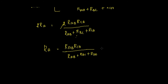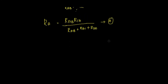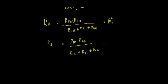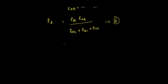Similarly, the expression for RB is: RB = RBC·RAB / (RAB + RBC + RCA). This is expression B. And RC is: RC = RBC·RCA / (RAB + RBC + RCA). You can follow the same derivation steps used for RA to verify these.